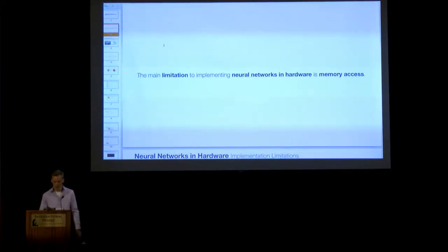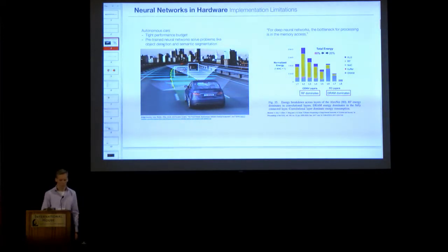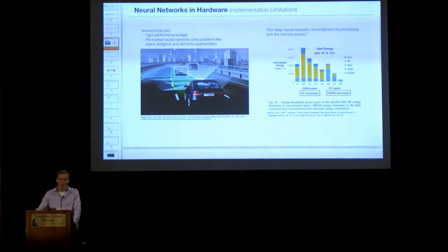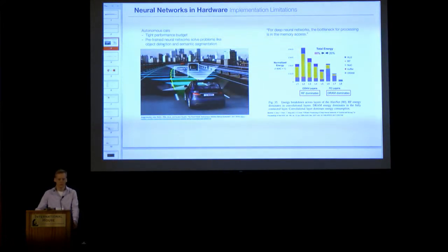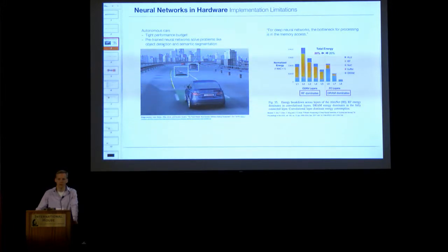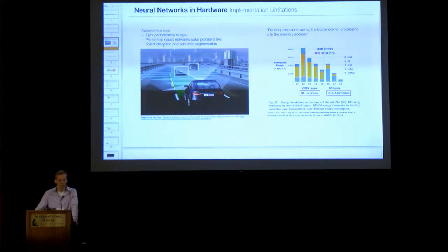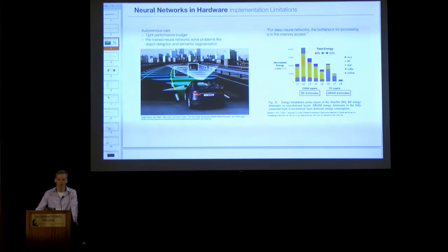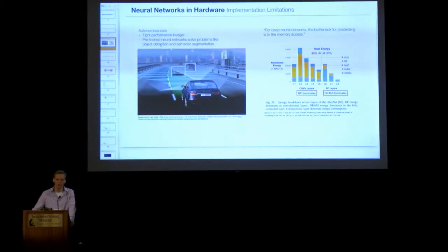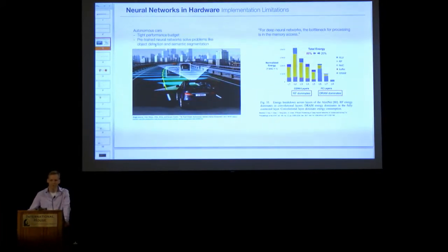And looking at the neural network accelerator field, it seems like most of the new hardware architectures that are coming out are aimed at solving the problem of memory access. Putting memory in the right place at the right time to enable faster processing. So my question was, what are the limits of this, of how far we can go in solving this problem?